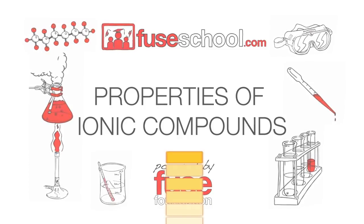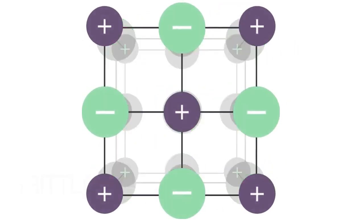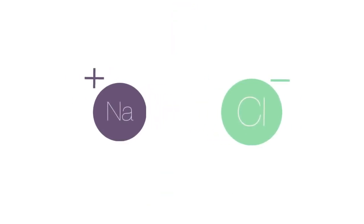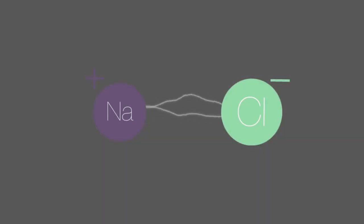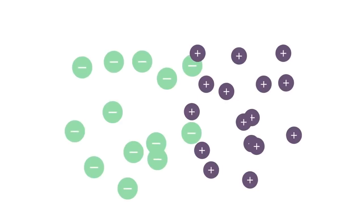These ionic compounds have very high melting points and are brittle because of their 3D giant ionic lattice structure. The strong electrostatic attractions holding the 3D lattice structure in place mean that a lot of energy is required to overcome these attractions. When we apply a force, it breaks the regular repeating pattern of oppositely charged ions, causing ions with like charges to come close to one another. The ensuing repulsion breaks the lattice structure.